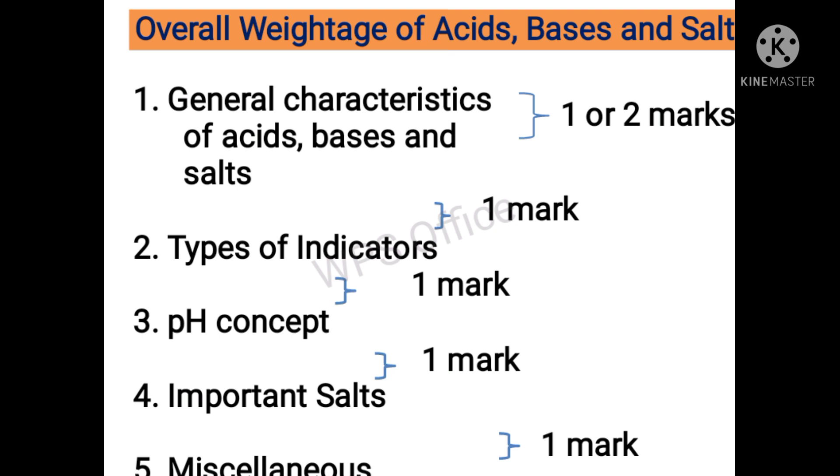One is general characteristics of acids, bases and salts. Another is types of indicators. We have to talk about pH concepts and important salts, and we have to talk about miscellaneous questions.